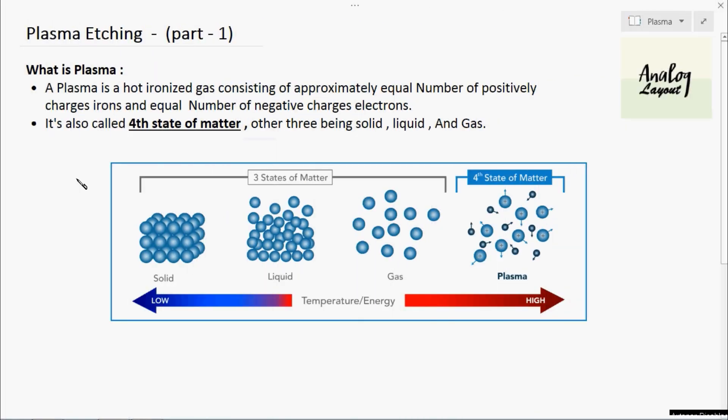So here in Plasma Etching Part 1 we are going to discuss what is meant by plasma and how the plasma is getting generated from any part of the matter.